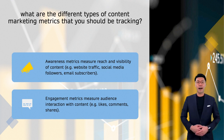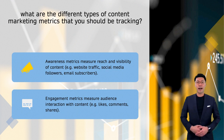Now, let's talk about the different types of content marketing metrics that you should be tracking. The first category is awareness metrics. These metrics measure the reach and visibility of your content, such as website traffic, social media followers, and email subscribers. These metrics can give you insight into how many people are seeing your content and how it is performing in terms of reach.